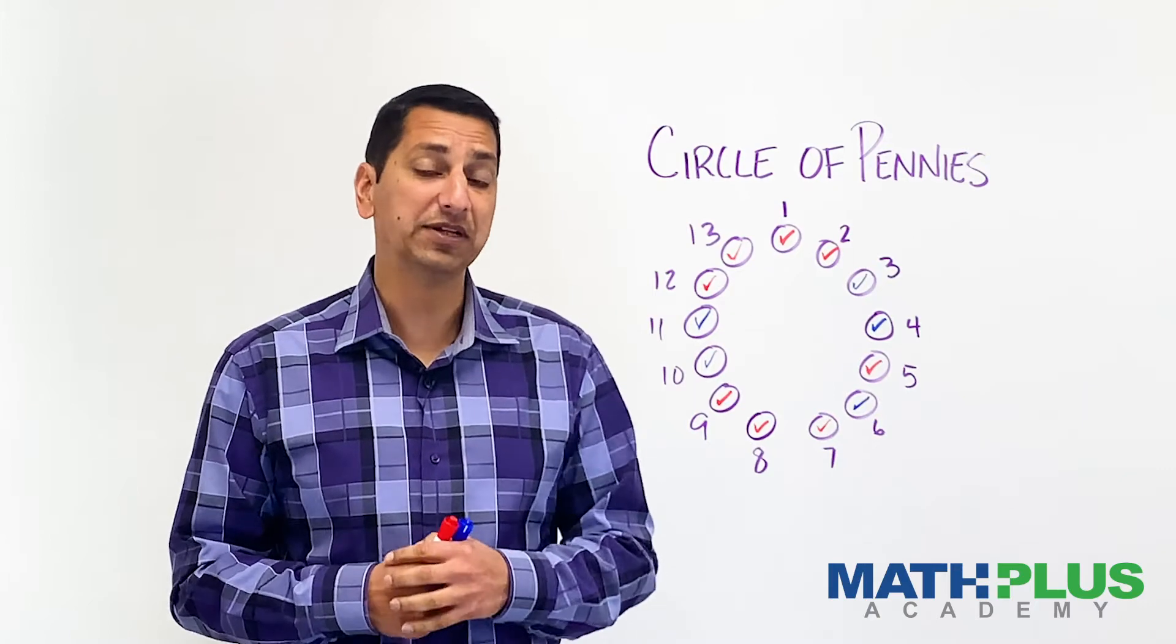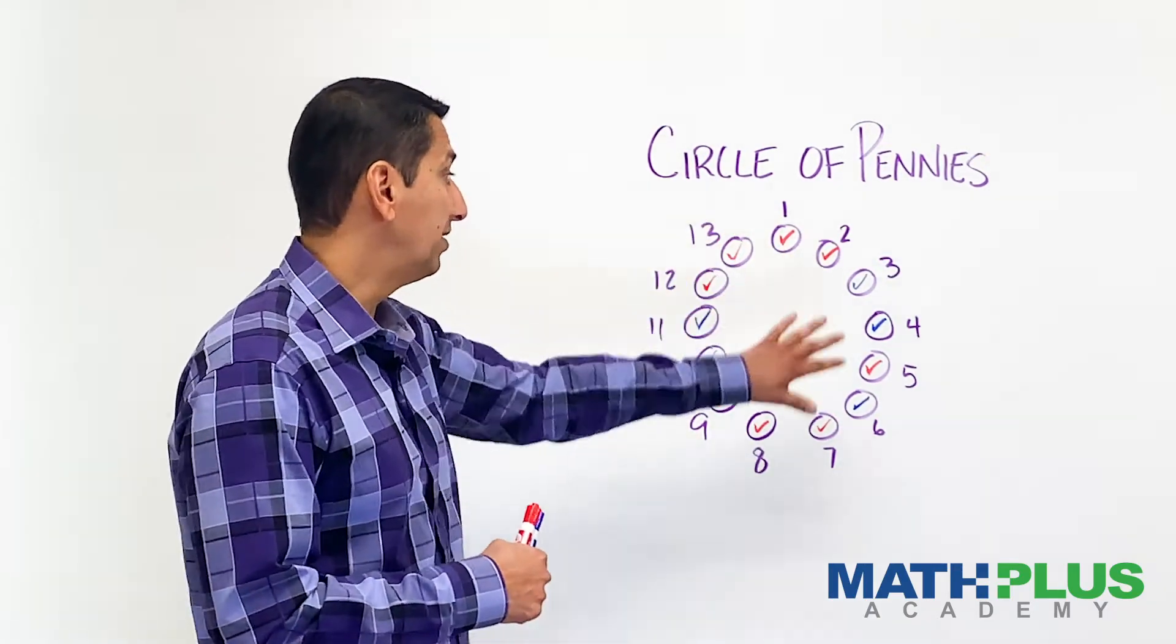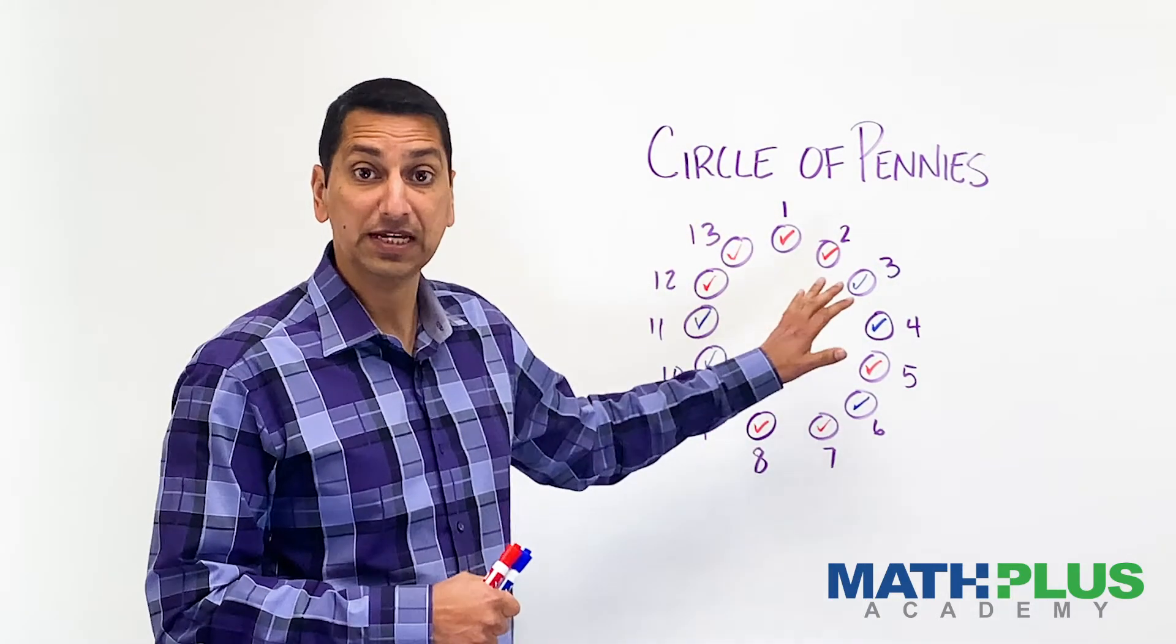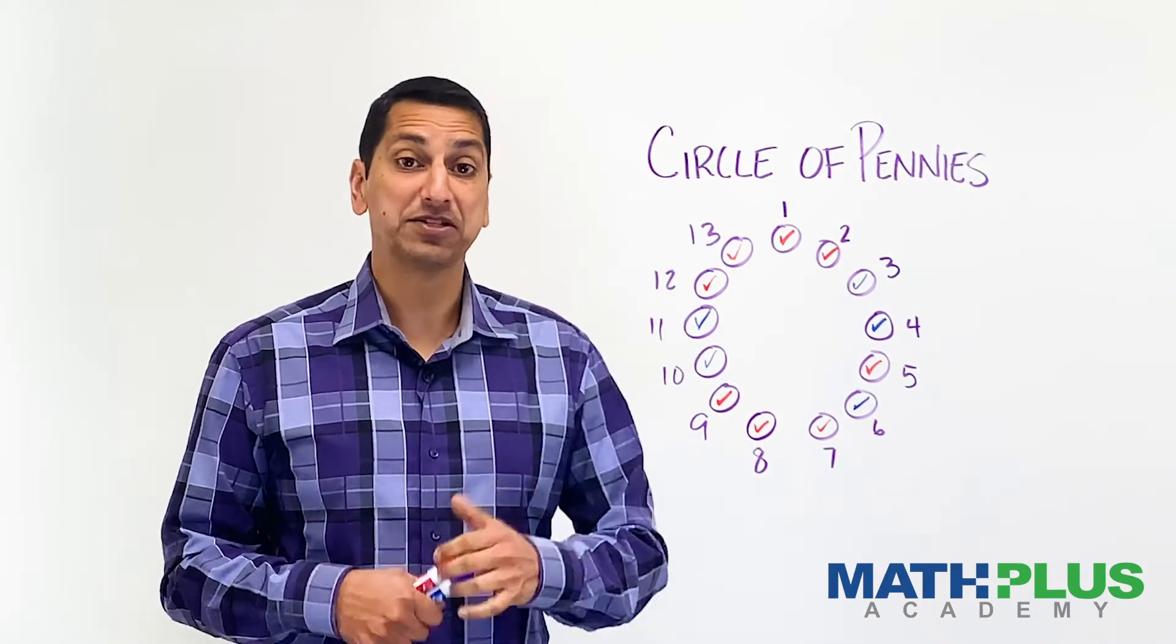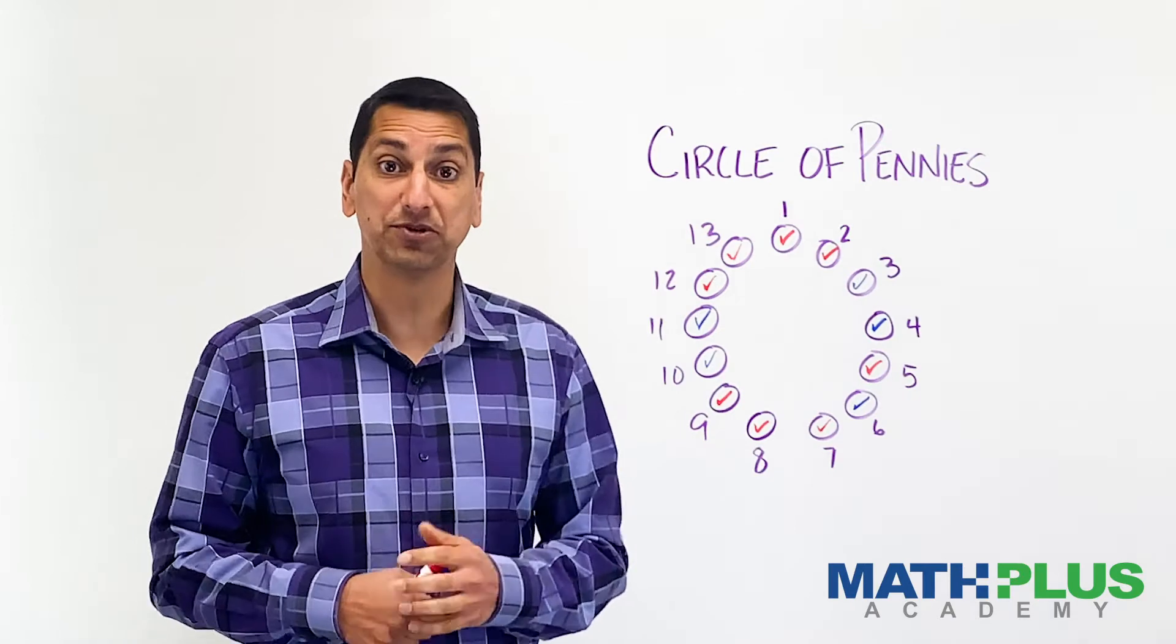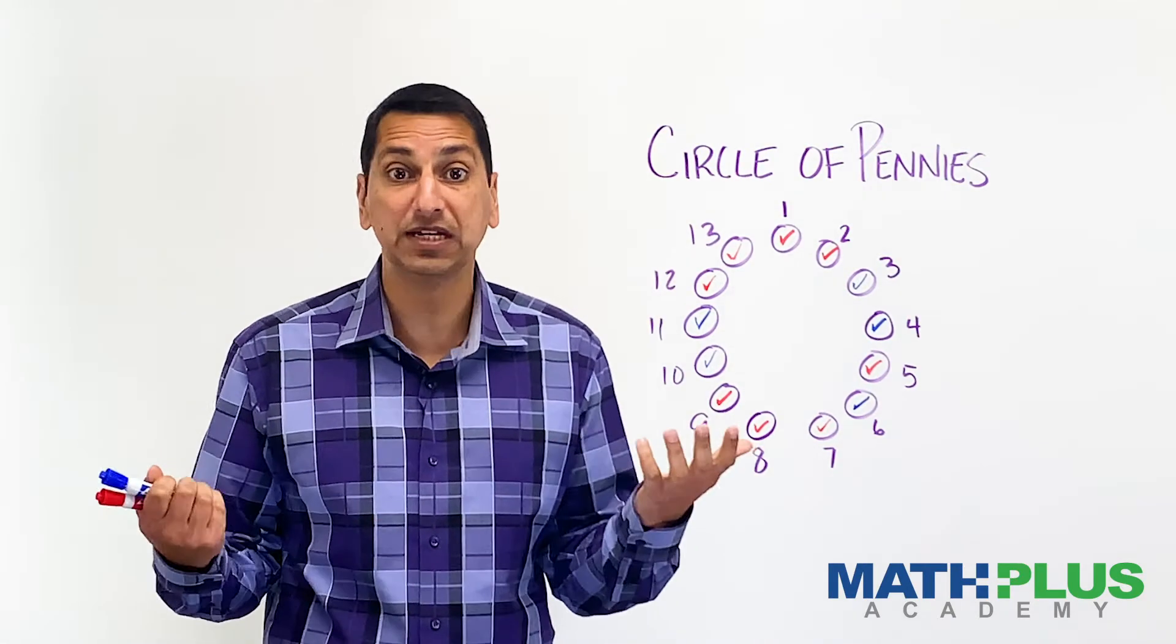So try and figure out what those strategies are. Play around with different amounts of coins. If you solve it, if you figure it out, awesome. Then think about some alternatives, like what if I change the rules that you could take one, two, or three coins?